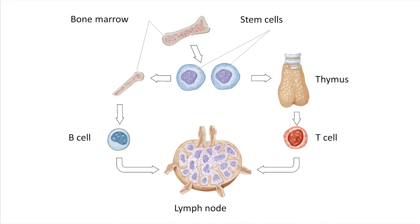You can conceptualize this analogically like alien children on an alien planet. When the children are small, they are sent to two different primary schools — the T schools and B schools. So they go to these primary schools, meaning primary organs, to undergo initial maturation. T cells mature in the thymus and B cells mature in the bone marrow.